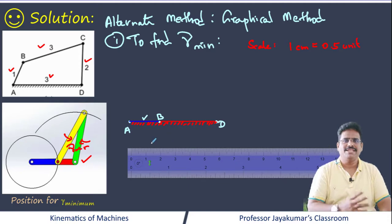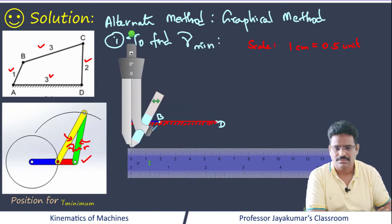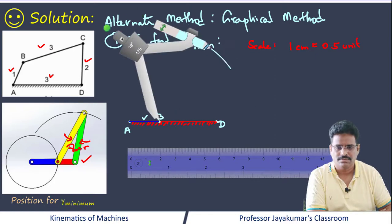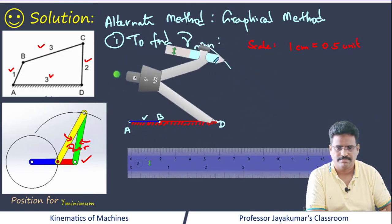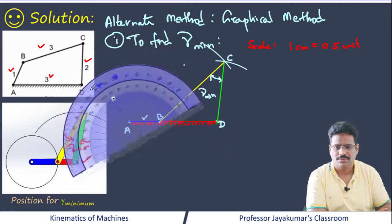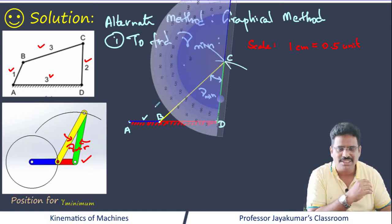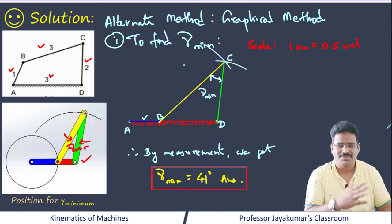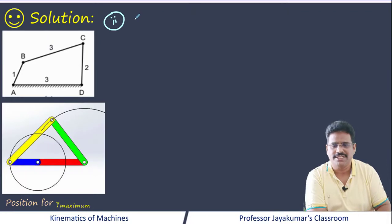I have drawn crank AB. Now I need to find intersection point C. Using the lengths of BC and CD, I cut arcs; the intersection point gives point C. By measuring the angle between the output link CD and coupler BC, I am getting 41 degrees. If you remember, the answer obtained by the analytical method was 41.4 degrees.